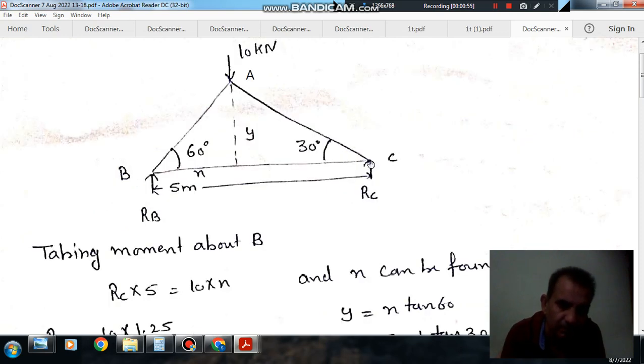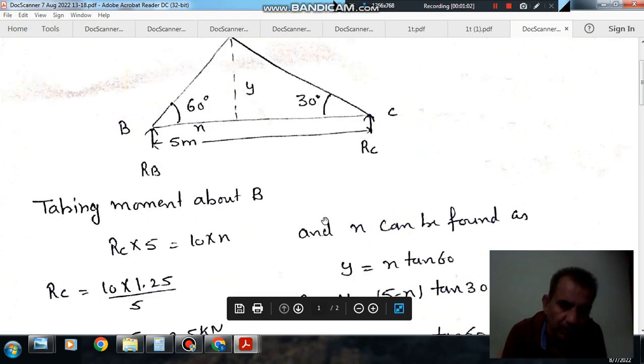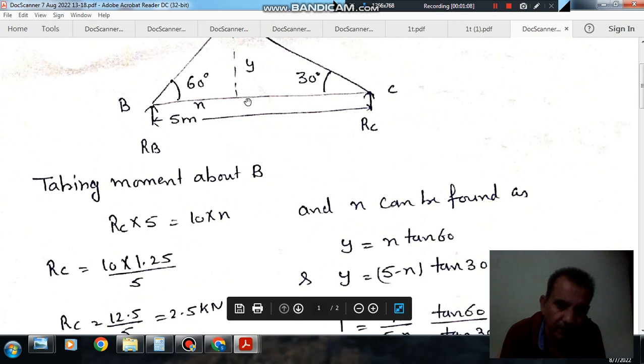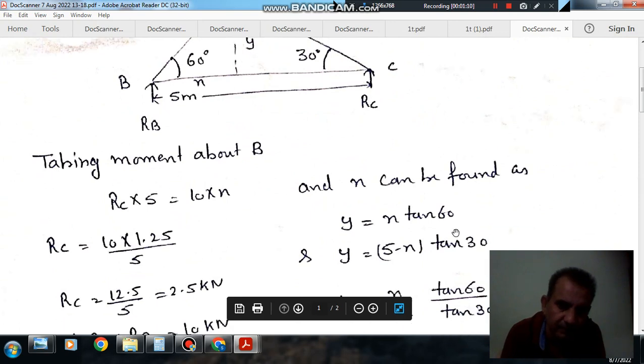So taking moment about B, RC into 5 will be equal to 10 into x. Now x can be found as y by x is tangent 60° and y by 5 minus x is tangent 30°.